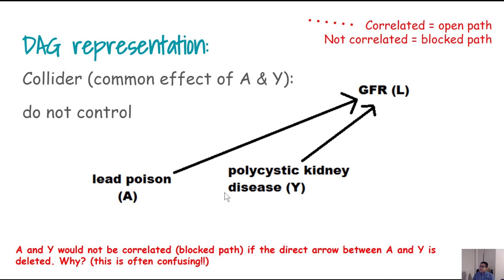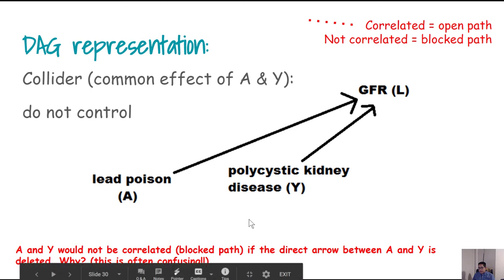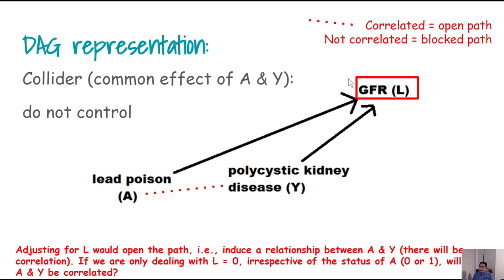To explain why no correlation appears with a collider, consider a genetic scenario: a child inherits genetic variations from both mother and father, but the mother and father may share no common genetic variation. When you adjust for the collider, the opposite of what happens with confounders occurs — the path opens and you will see correlation. This is one of the most interesting and confusing aspects in epidemiology: with confounders you must adjust, but with colliders, adjusting actually induces more bias.